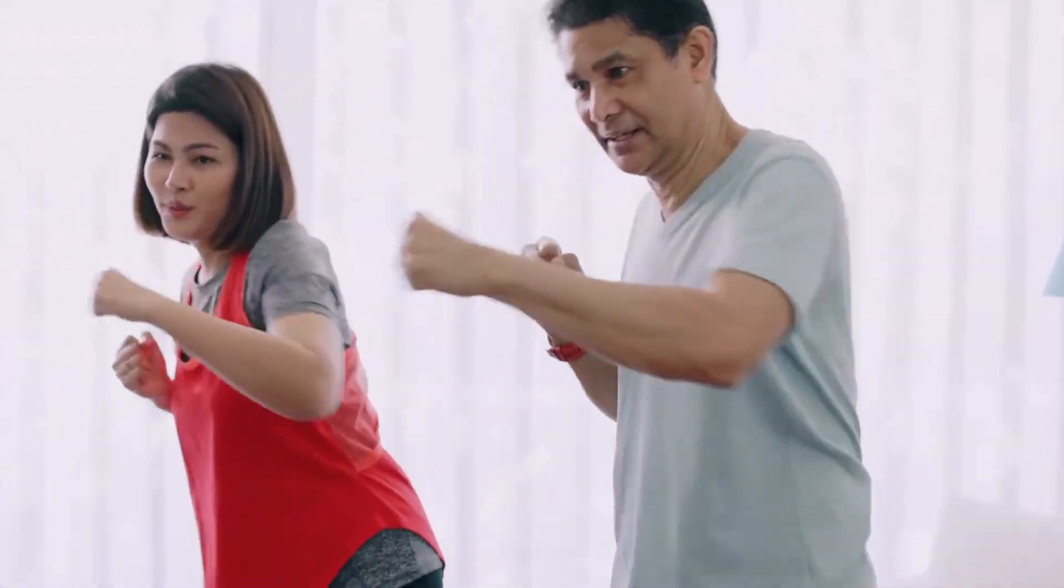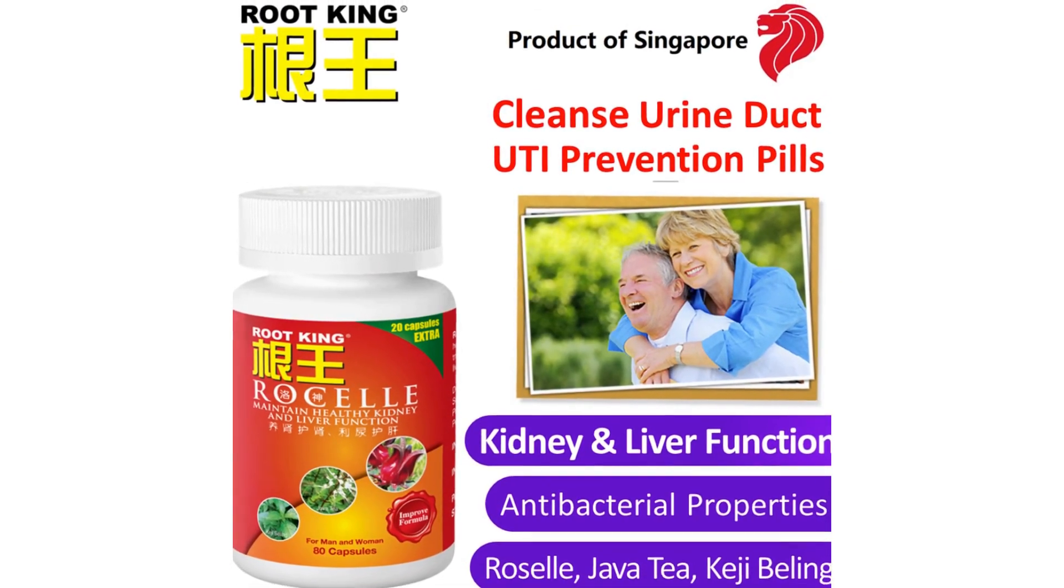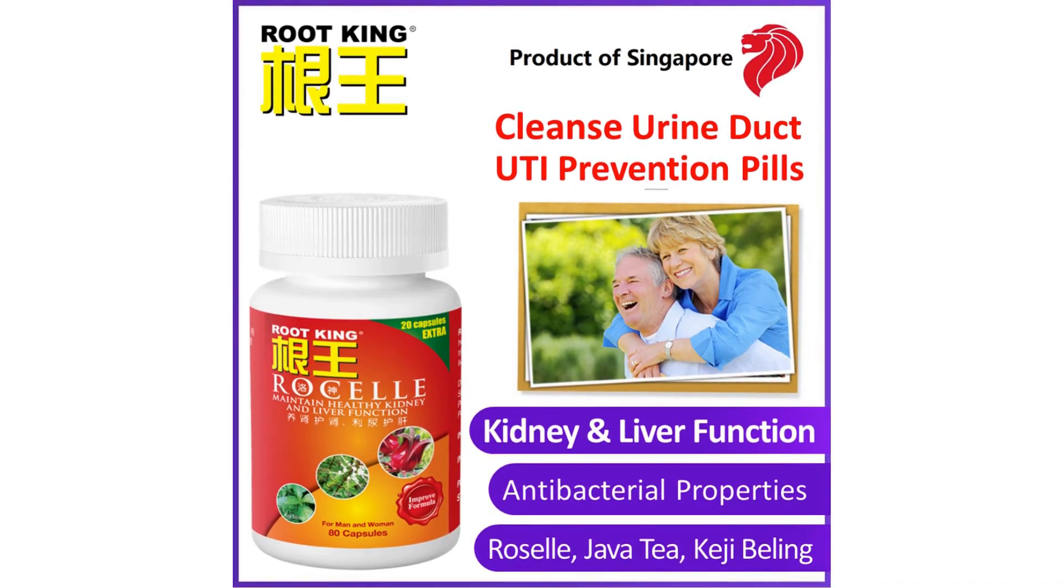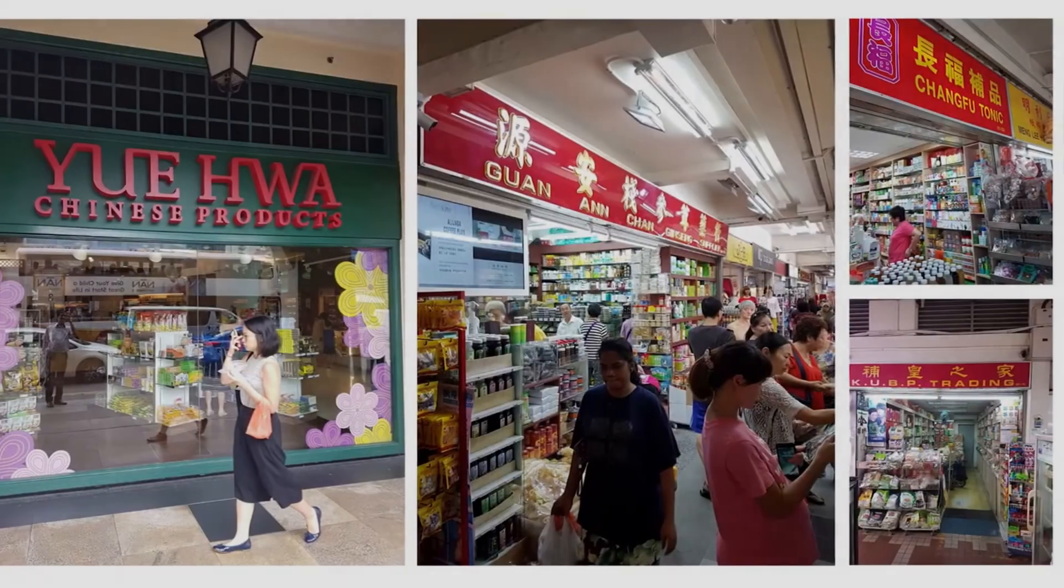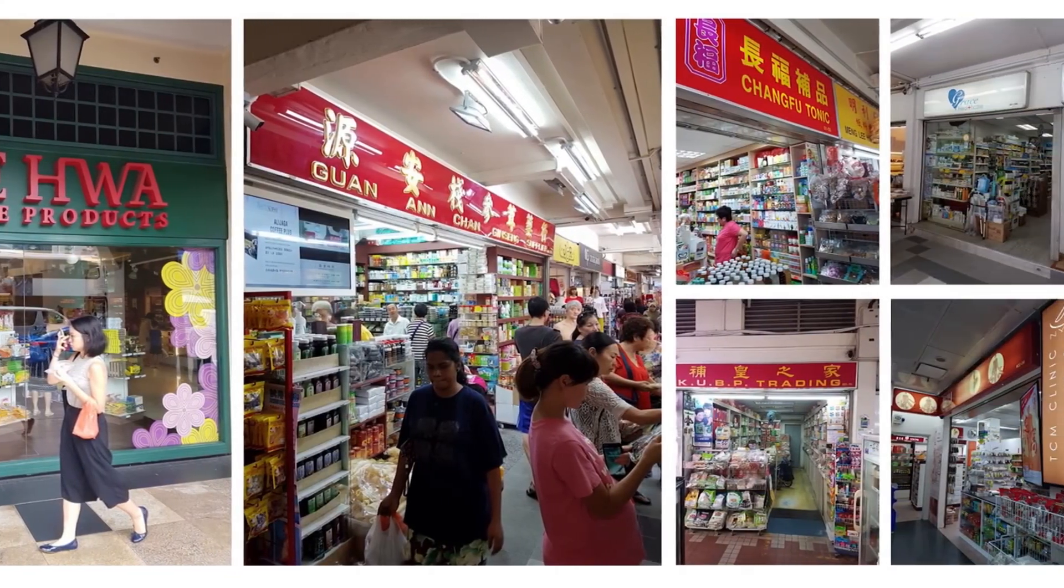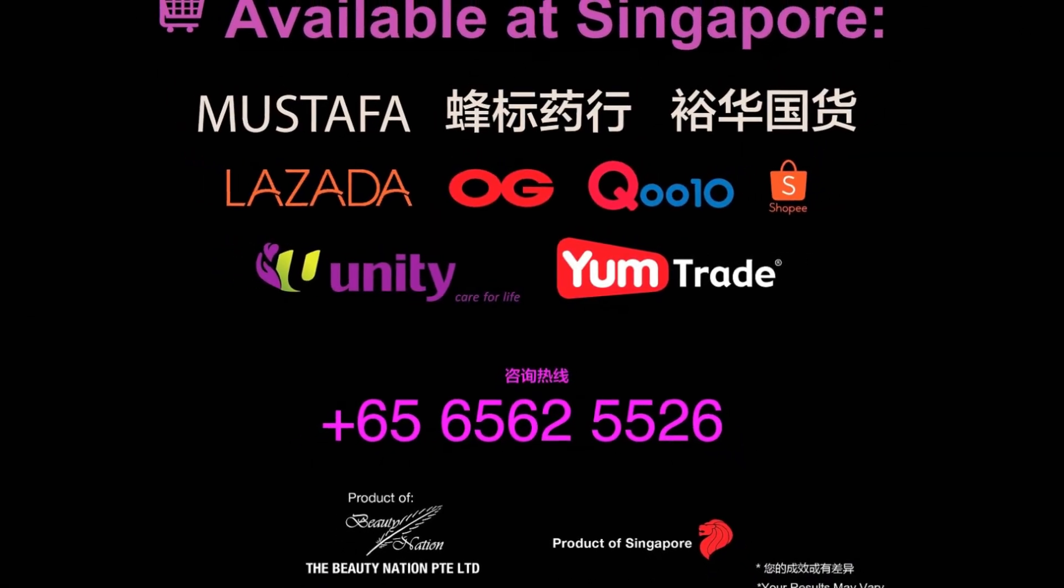Root King Rosell capsules are available at pharmacies and Chinese TCM medicine stores in Singapore, priced at $48 Singapore dollars. For inquiries, please call 6562-5526.